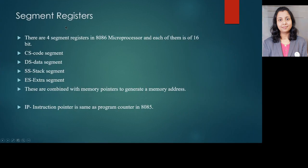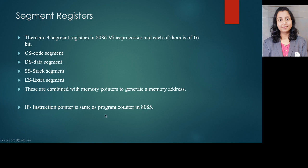There are four segment registers in the 8086 microprocessor, each 16-bit: CS (code segment), DS (data segment), SS (stack segment), and ES (extra segment). These are combined with memory pointers to generate a memory address. The IP, or instruction pointer, functions the same as the program counter in 8085 — it is a 16-bit register that keeps track of the next instruction to be executed.